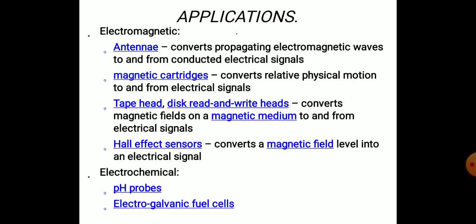Key applications of transducers include electromagnetic applications — antennas that convert propagating electromagnetic waves to and from conducted electric signals. Magnetic cartridges convert relative physical motion to and from electric signals. Tape head disc read and write heads convert magnetic fields on a magnetic medium to and from electric signals. Hall effect sensors convert a magnetic field into an electric signal. Electrochemical applications include pH probes that produce electrical signals from chemical effects, and electrogalvanic fuel cells.